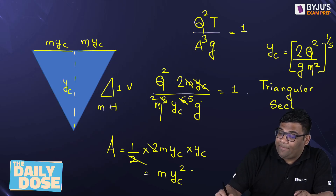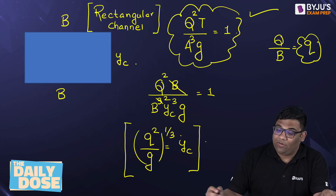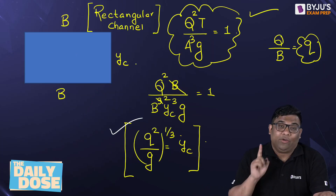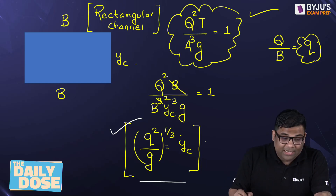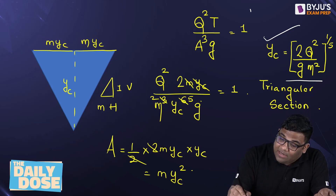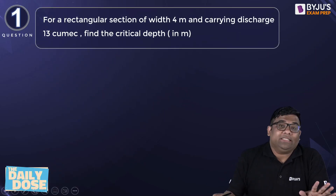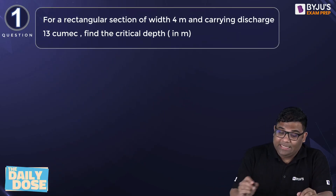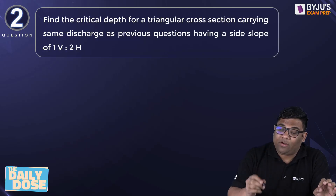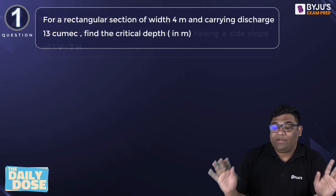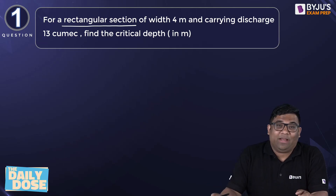So this is the comparison of critical depth for a triangular section versus a rectangular section. You have to be very careful when you are using these equations for different numerical problems. This is for rectangle and this is for triangle, but both of them are coming from the same governing equation. I have given you two questions — one for a rectangular section and one for a triangular section. Use the formulas which are given and answer in the comment section. Thank you very much, I'll see you next time.